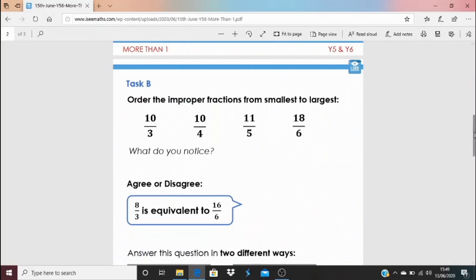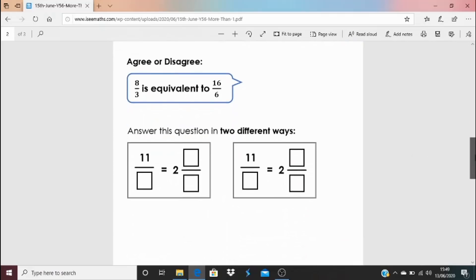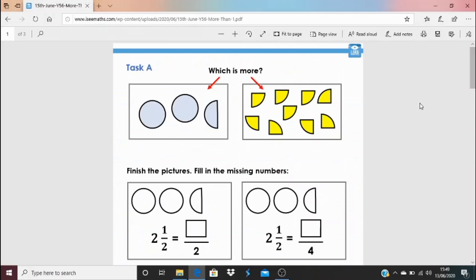Task B is quite different. So when you order these improper fractions, what do you notice? There's an agree or disagree question. So for you, we're looking for an explanation as to how you know. And then this question can be answered in two different ways. So what are those possible answers? The answers are at the bottom and I am, as ever, really looking forward to seeing you back tomorrow.